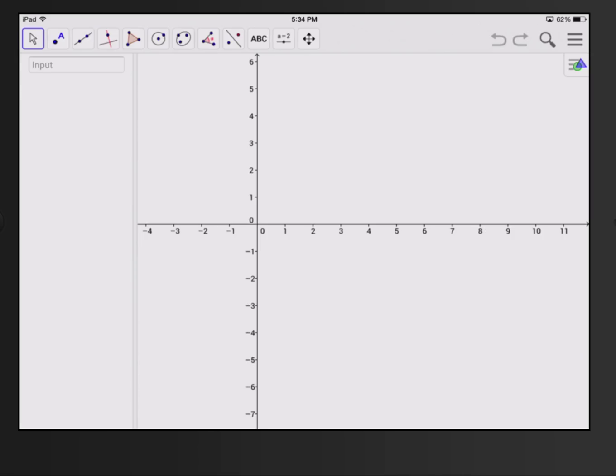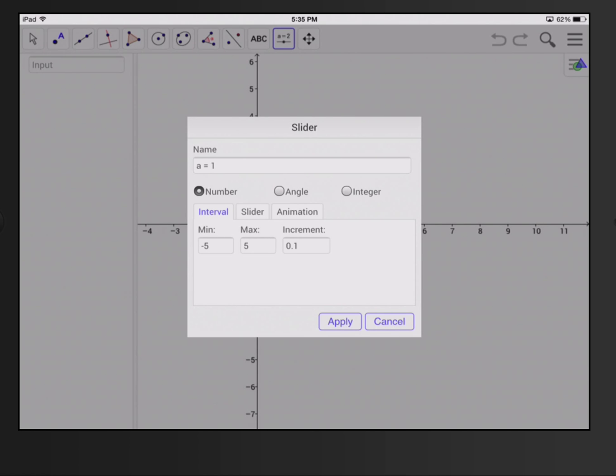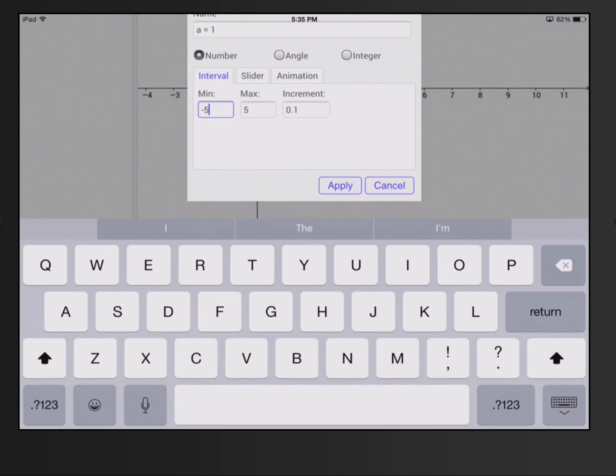And so I'm just going to set up three sliders, one of them for the coefficient of the x squared, which I'm going to go from negative 10 to 10.